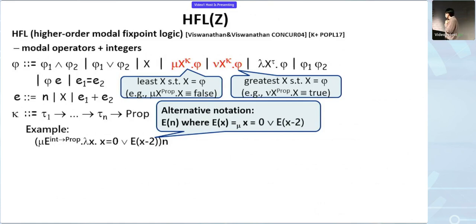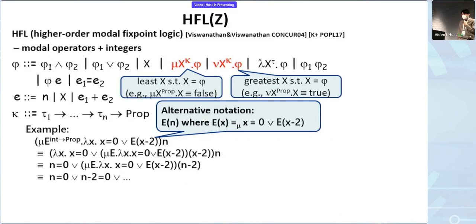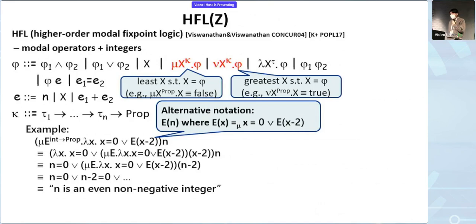To see what this formula means, let us unfold the fixed-point formula and get this one, then beta-reduce it to get the next one. By repeating these steps we get a formula which means that n is an even non-negative integer.